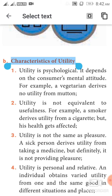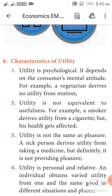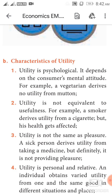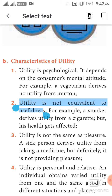Characteristics of utility. Utility is psychological — it depends on the consumer's mental attitude. For example, a vegetarian derives no utility from mutton. Utility is not equivalent to usefulness. For example, a smoker derives utility from a cigarette but his health gets affected. Utility is not the same as pleasure.